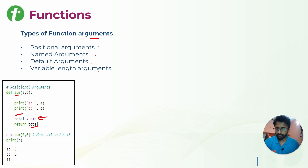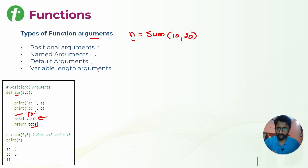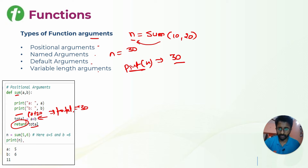When I call this function, I create an identifier n and call the function with two values, for example 10 and 20. The value 10 plus 20 is assigned to total, which is 30, and that 30 is returned back to n. When you print n, you get 30 as your output.